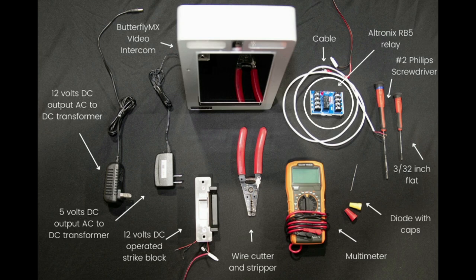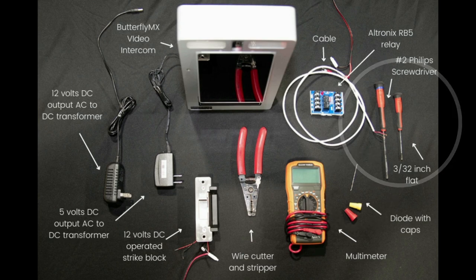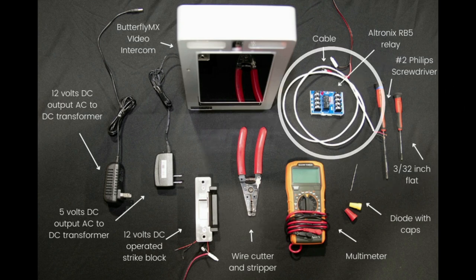A multimeter. Ultronix RB5 relay set to 12 volt DC operation. This is the default factory setting. Please refer to the RB5 documentation to verify it is in the correct setting. Diode, caps, and or dolphins. The diode is minimum 400 volt, 1 amp, 1N4004 type, 3/32 inch flat and number 2 Phillips screwdriver, wire cutter and stripper, as well as cabling.